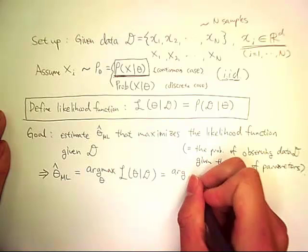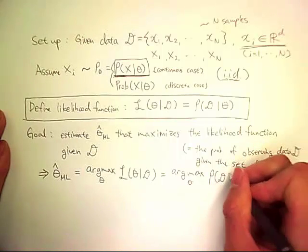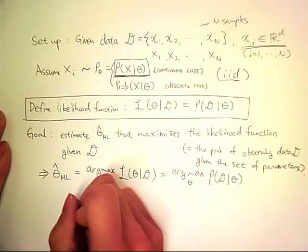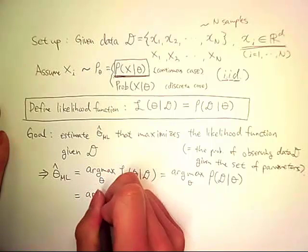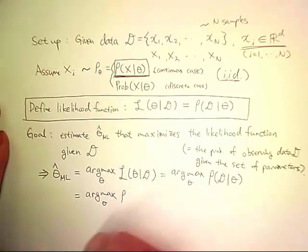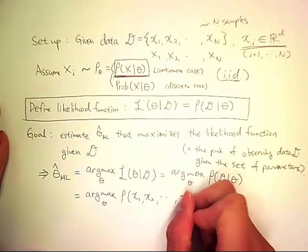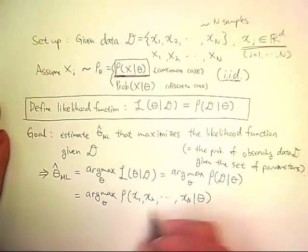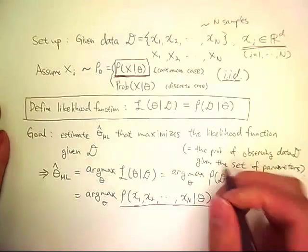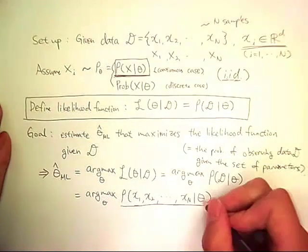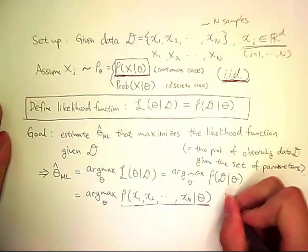We can write this as argmax of theta of probability of D given theta. Also, we can rewrite this as argmax of rho of x sub 1, x sub 2, and x sub n. So this is a probability of getting n samples, x sub 1, x sub 2, all the way to x sub n given theta.